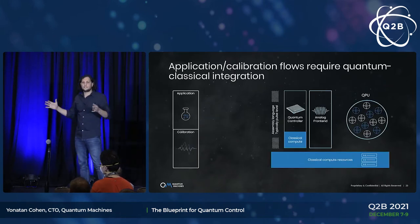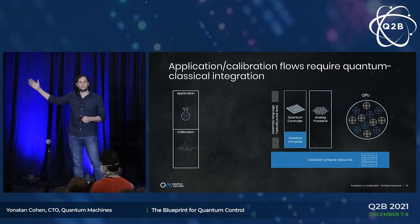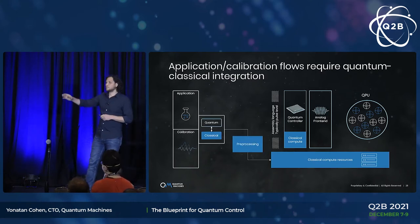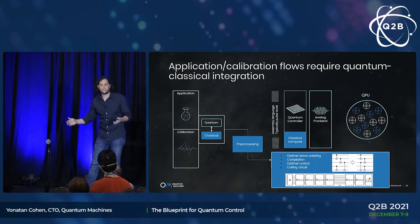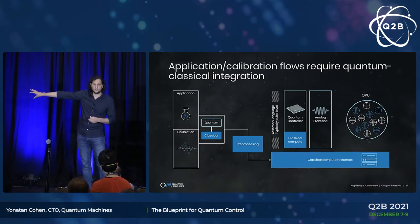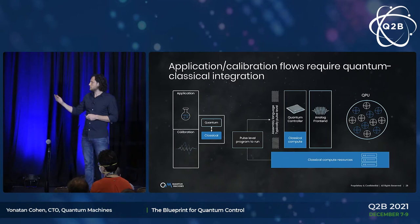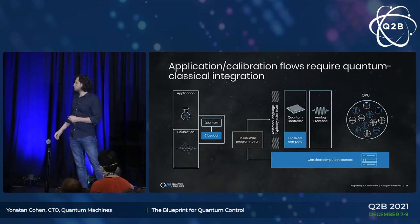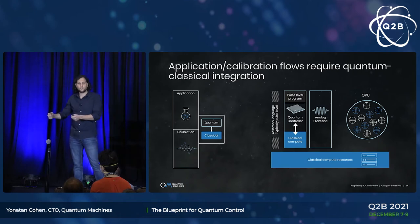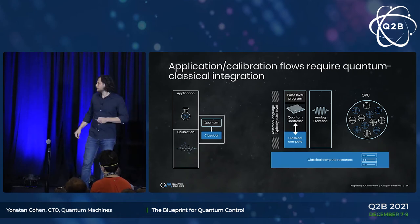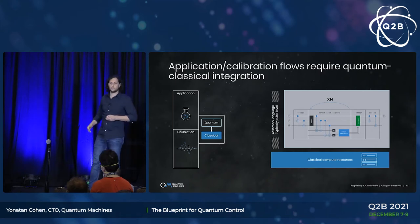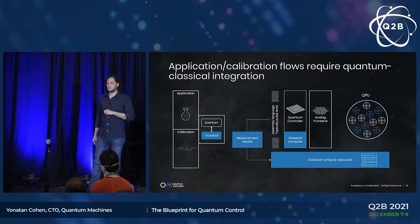To give you a feeling of why classical processing is so important: almost any application or calibration involves a complex flow of quantum and classical processing. This can start from pre-processing like circuit compilation and optimization on the classical server layer, which then generates the pulse-level program to be run on the quantum machine. The controller executes it, and sometimes the program includes real-time processing — that's where we need real-time classical compute. One example is exploring quantum error correction protocols such as the repetition code.